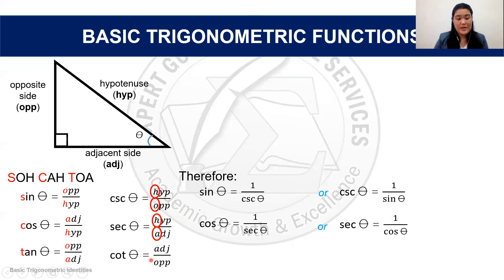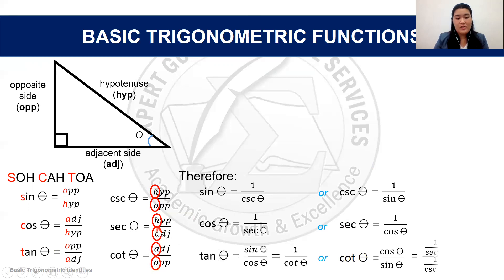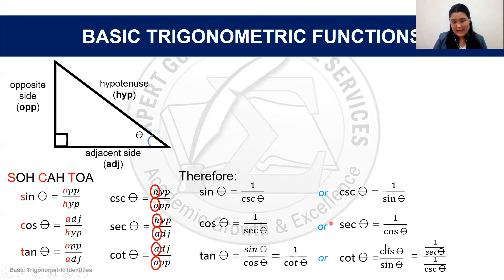The last one is cotangent, which is adjacent over the opposite side — the reciprocal of tangent. Since tangent equals sine over cosine, cotangent equals cosine over sine. Or substituting their inverses, cotangent equals cosecant theta over secant theta.